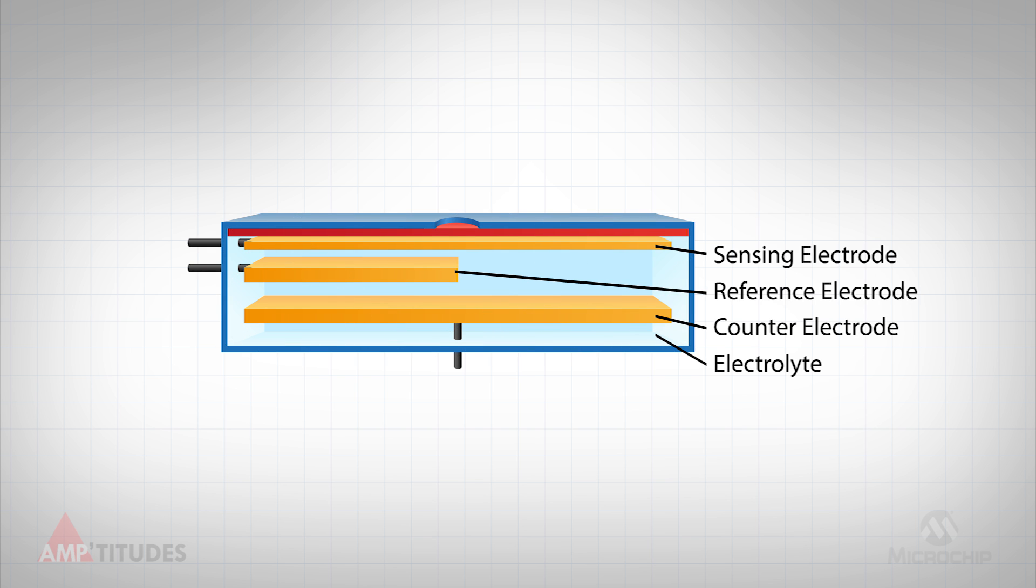There are both two terminal and three terminal electrochemical gas sensors in use today, with a majority of the more recent sensors employing three terminals, namely a sensing, reference, and counter electrode. A two terminal sensor will not have a reference electrode.